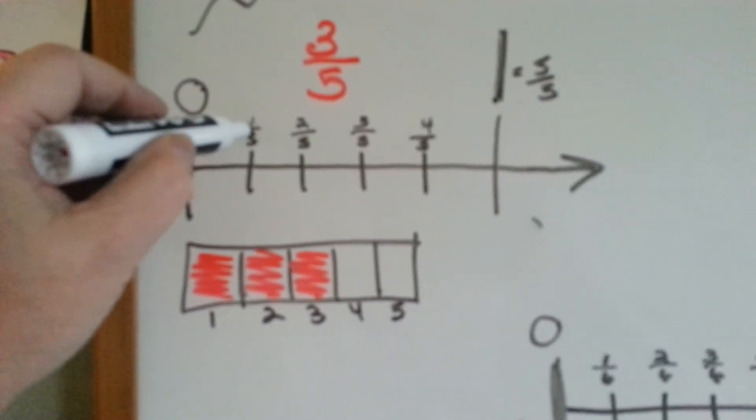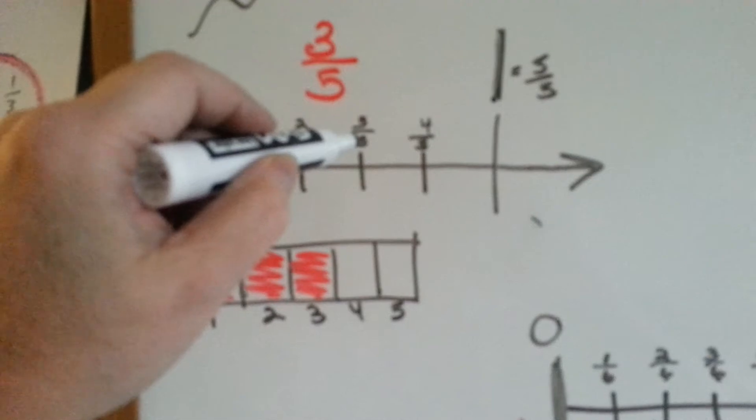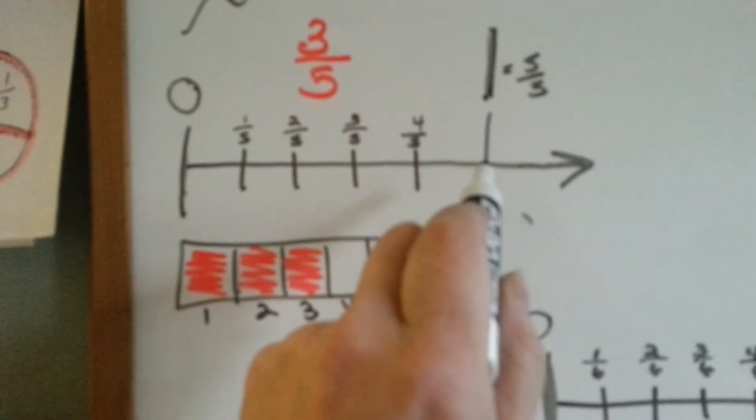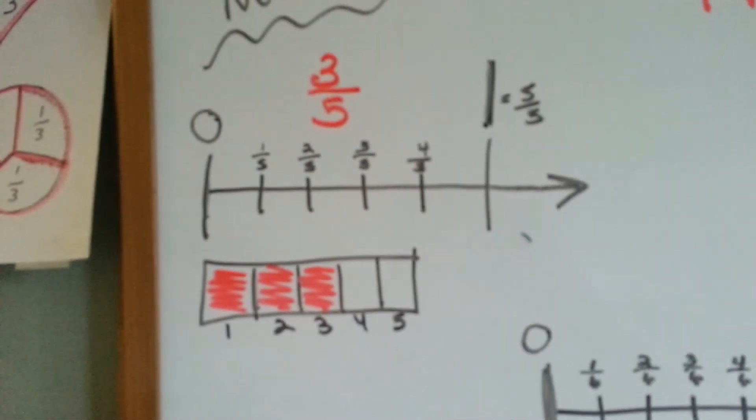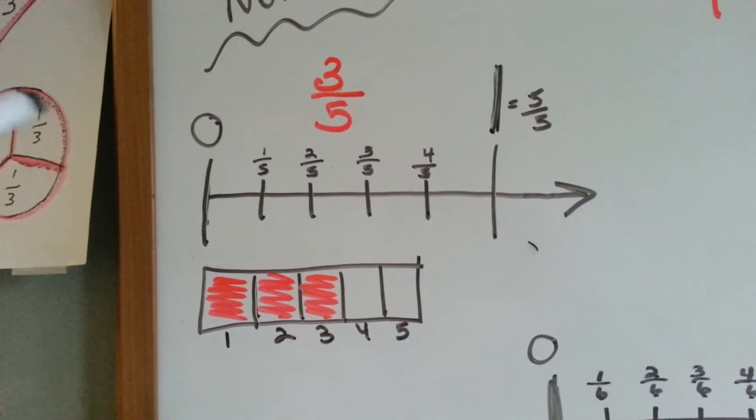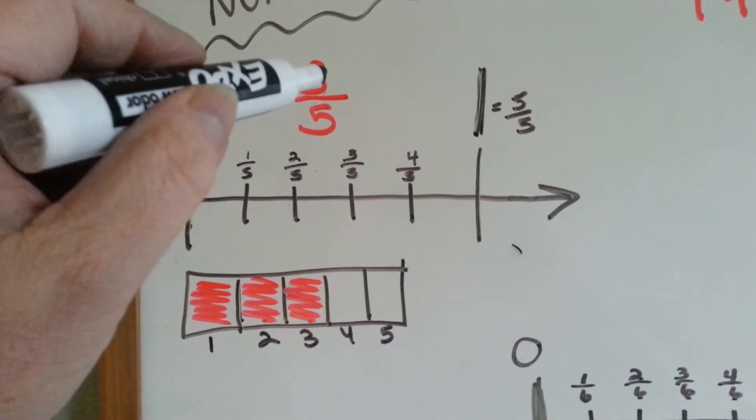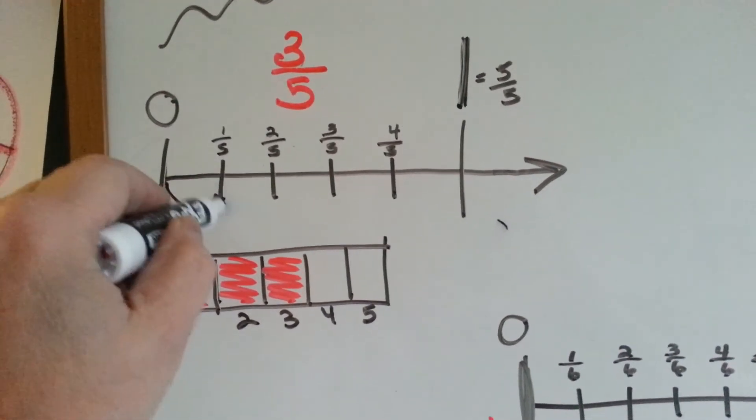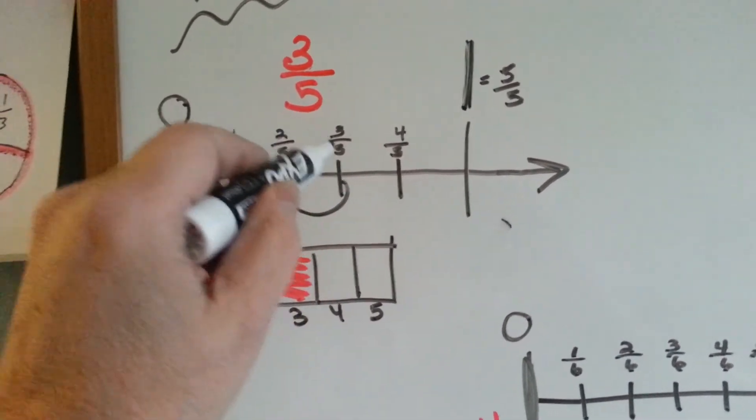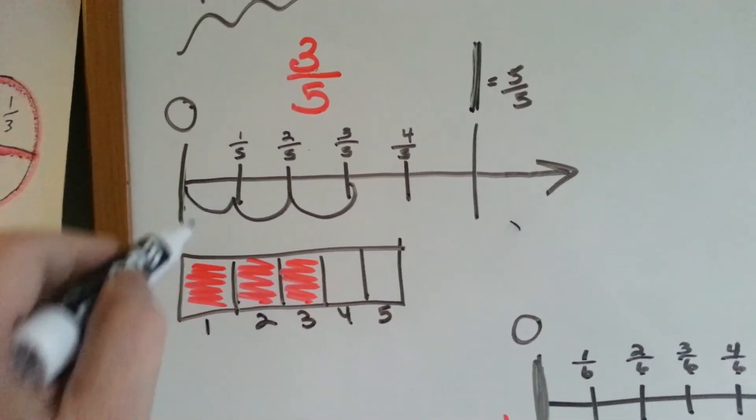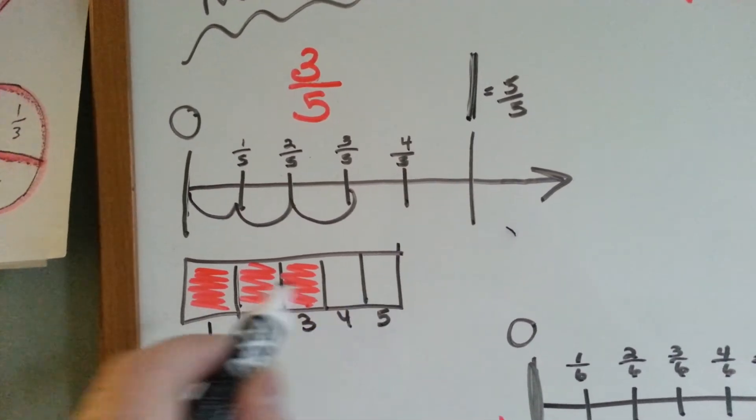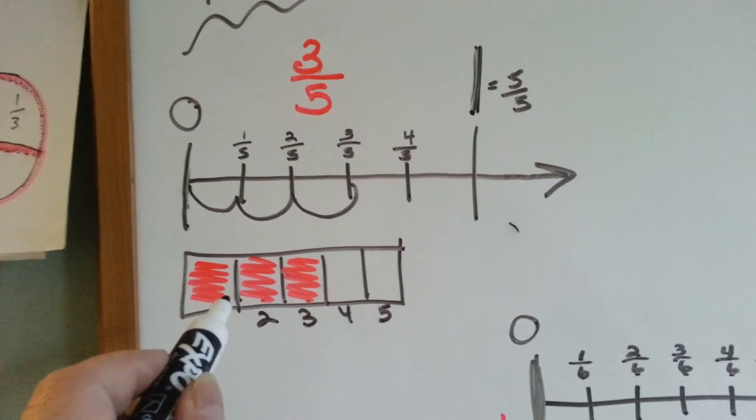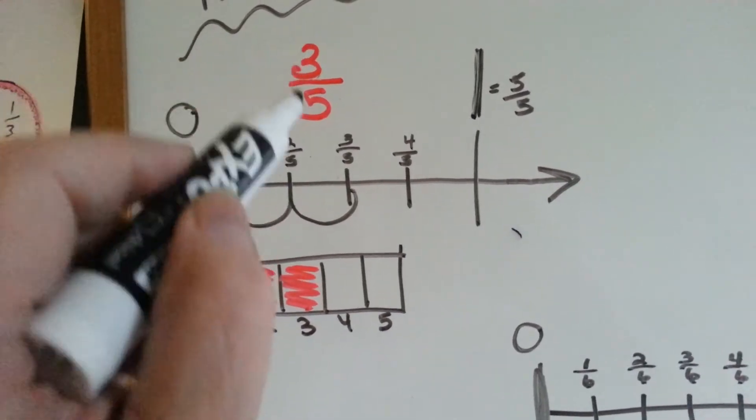The first line would be one-fifths, two-fifths, three-fifths, four-fifths, and one whole would be five-fifths. Fighting with the focus here. So, if we wanted to find three-fifths, we would go one, two, three, and it would be here. It would be three parts of something that was split into five parts. Three-fifths.